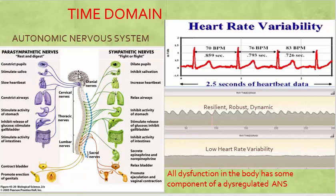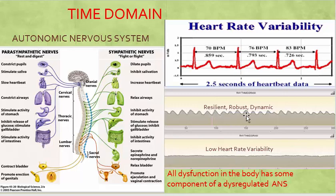What is the time domain? The time domain is basically the interval between RR intervals, and these change slightly as affected by the autonomic nervous system. When we see a nice reaction of the heart rate, the RR interval will change smoothly — this represents resilient, robust, dynamic changes in the RR interval. The lower screen shows low heart rate variability, where you don't see any changes — the RR interval is not changing and we see a flat line, not a waveform.